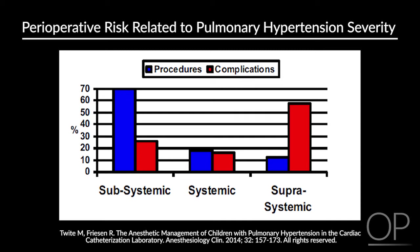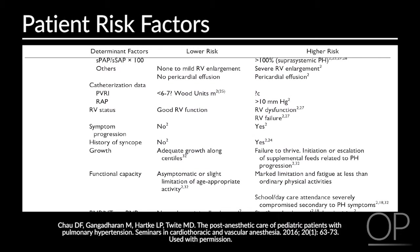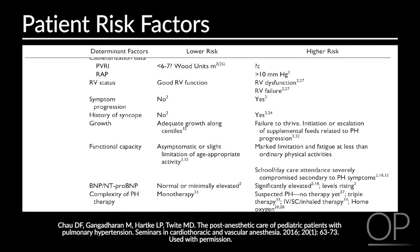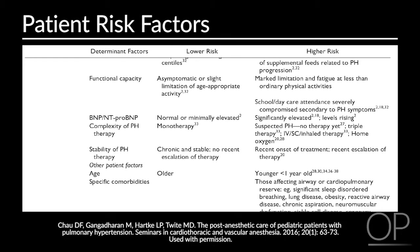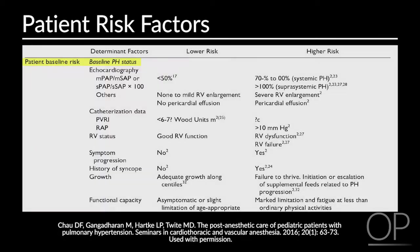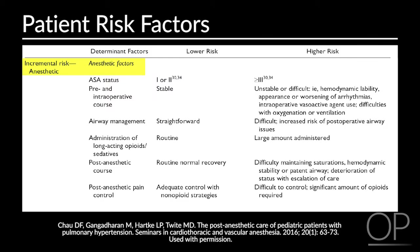This study indicates that perioperative complications are directly related to the severity of pulmonary arterial hypertension. Patients with suprasystemic right ventricular pressures have greater complications during surgery. Baseline suprasystemic pulmonary arterial hypertension is a significant predictor of major complications during anesthesia. This table is a non-validated tool that groups patients into low-risk or high-risk based on patient factors, surgery factors, and anesthetic factors involved.